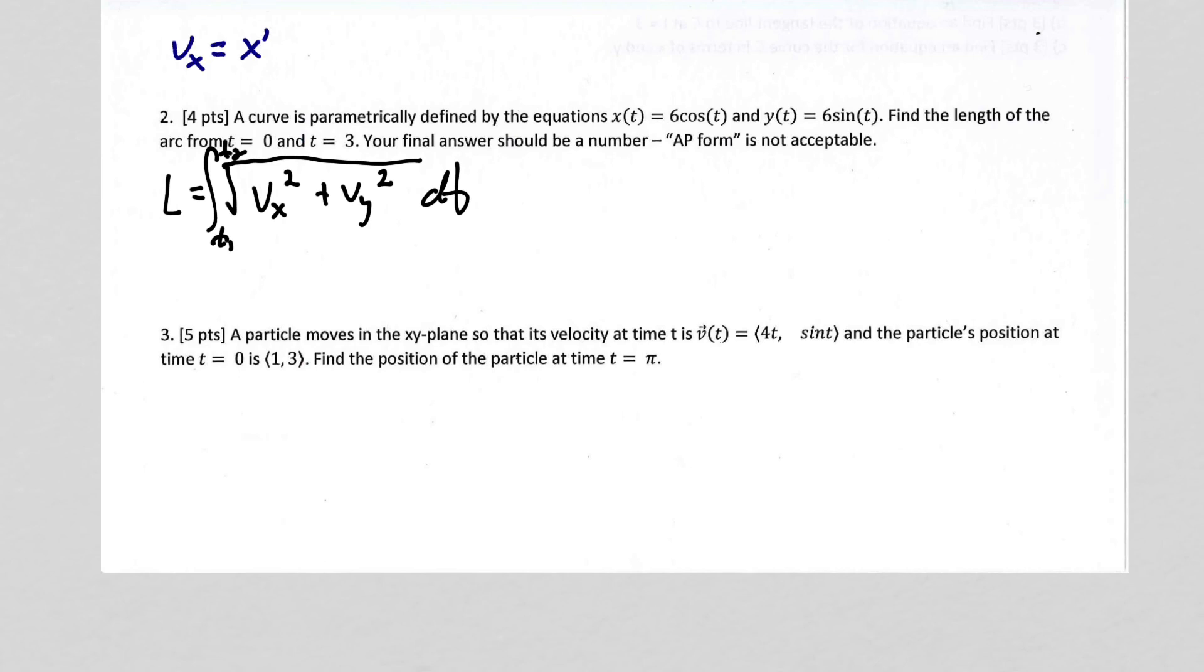So vx is x prime, which gives me negative 6 sine of t. And then you know what I'm going to do? I'm going to square that thing.